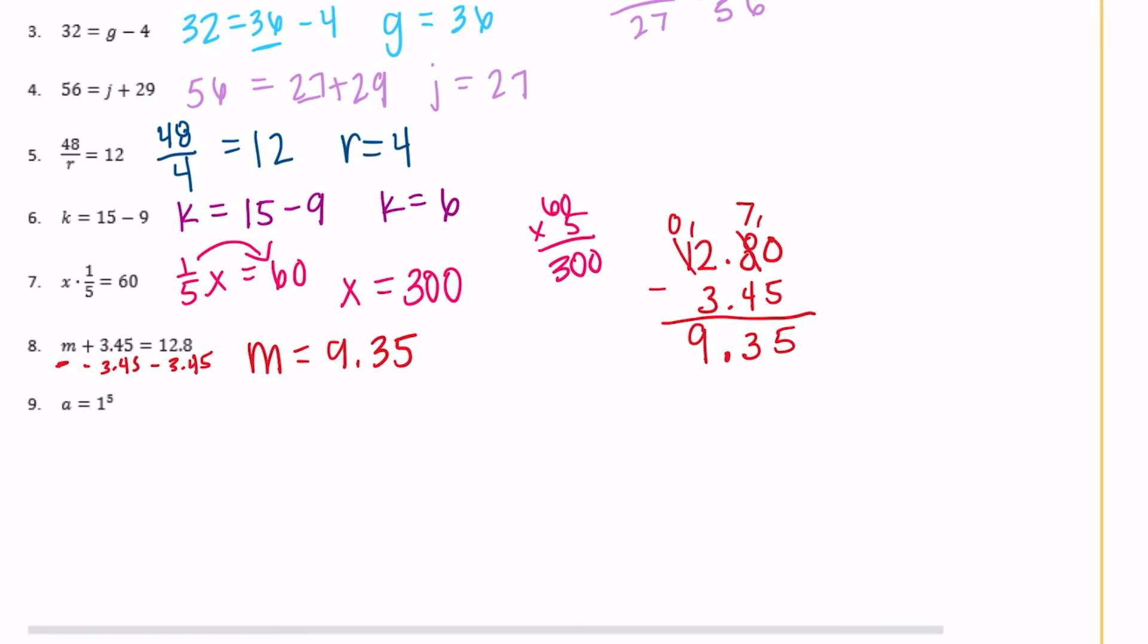And then the last one: a is equal to 1 to the fifth power. So 1 to the 5th power is saying that you multiply 1 by itself 5 different times. So it'd be 1 times 1 times 1—there's 3, 4, 5—which, 1 times 1 doesn't matter how many times you're going to multiply 1 by itself, you are going to keep getting 1. So a is equal to 1.